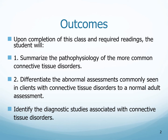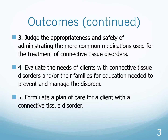The outcomes for this class: we will be summarizing the pathophysiology of the more common connective tissue disorders, and we will differentiate it between abnormal assessments and compare that to someone with a normal adult assessment. We will identify diagnostic studies associated with connective tissue disorders, and we will judge the appropriateness and safety of administering the more common medications used for their treatment.